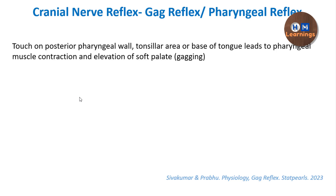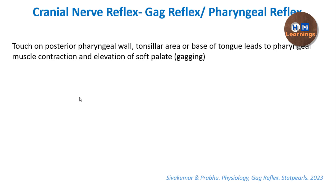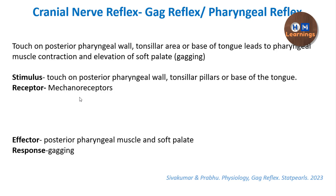Like other reflexes, the stimulus here is a touch on the posterior pharyngeal wall, tonsillar pillars, or base of the tongue. The response is gagging — asymmetric contraction of the pharyngeal muscles and elevation of the soft palate. The receptors are mechanoreceptors because the stimulus is touch. The effectors are the posterior pharyngeal muscle and the soft palate. The afferent nerve carrying sensations from these areas is the glossopharyngeal nerve.